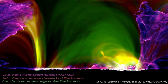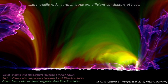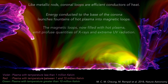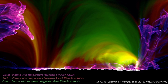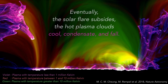Like metallic rods, coronal loops are efficient conductors of heat. Energy conducted to the base of the corona launches fountains of hot plasma into magnetic loops. The magnetic loops, now filled with hot plasma, emit profuse quantities of X-rays and extreme ultraviolet radiation. Eventually the solar flare subsides; the hot plasma clouds cool, condense, and fall.